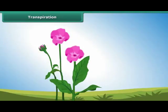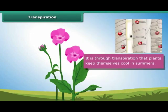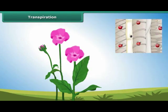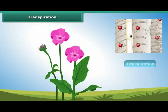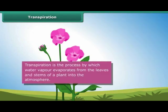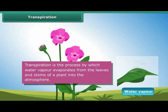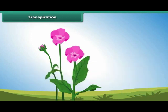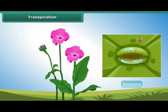An important function of the leaf is to keep the plant cool in summers. This is accomplished through transpiration. Transpiration is the process by which water vapor evaporates from the leaves and stems of a plant into the atmosphere. Small pores called the stomata on the underside of the leaves facilitate transpiration.